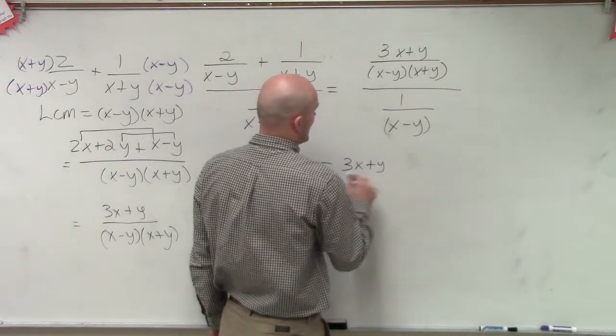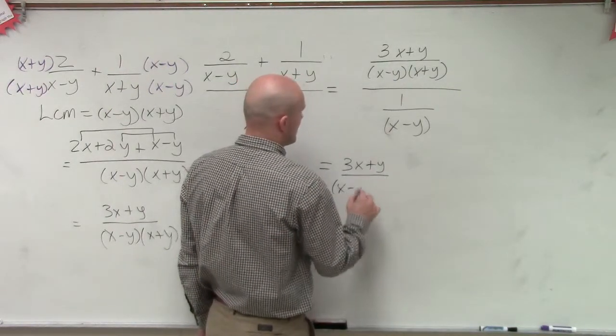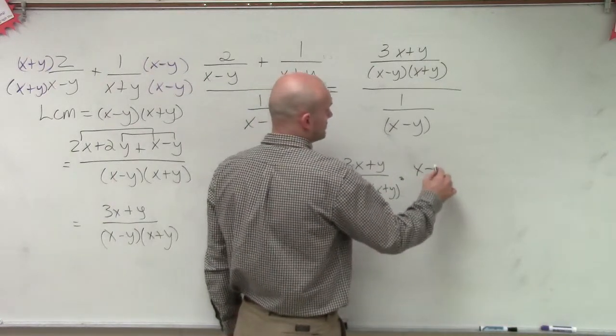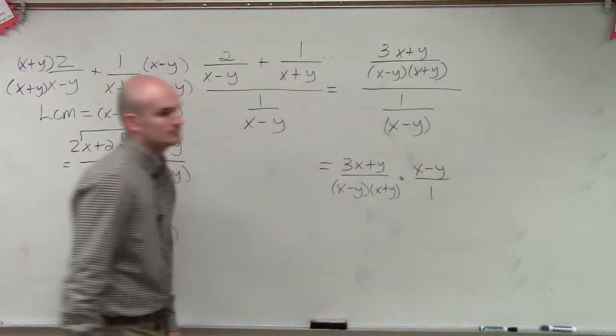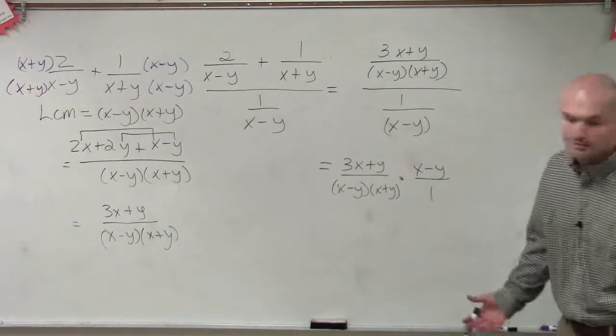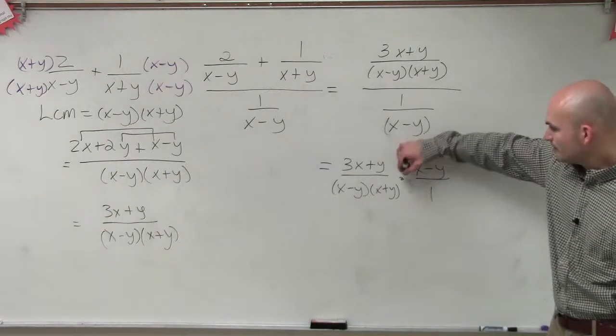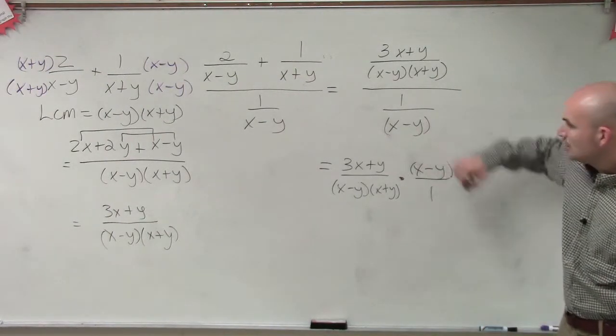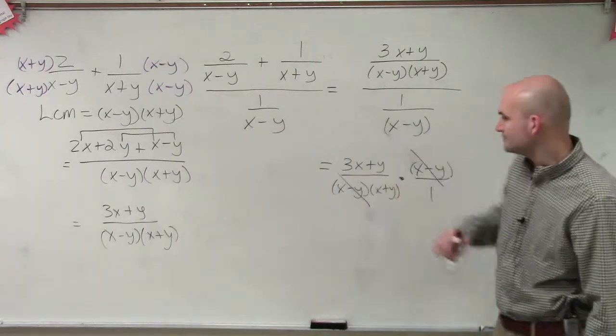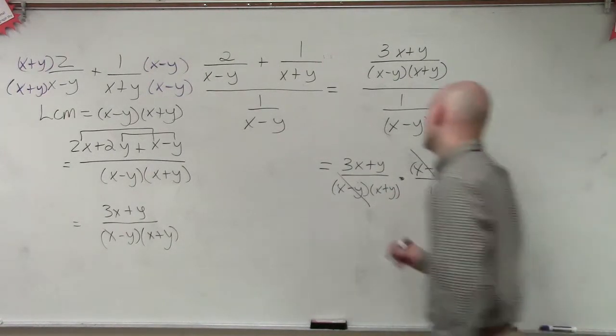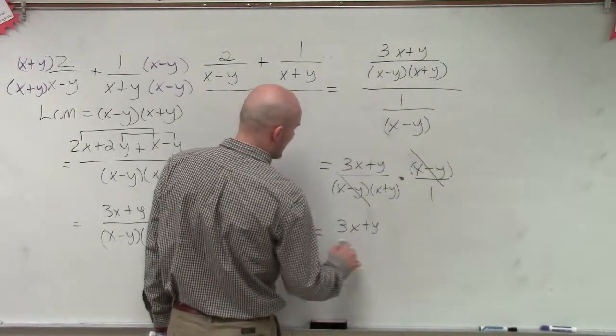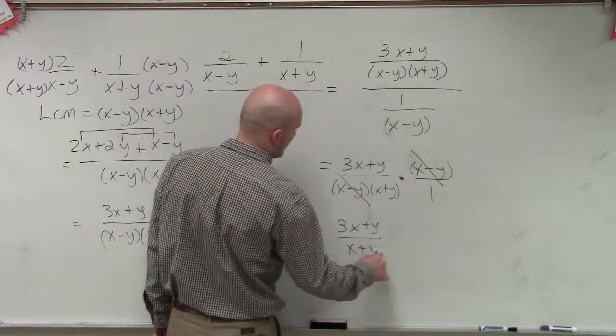So I have 3x plus y divided by x minus y times x plus y times the reciprocal. Yes? No? Maybe so? Yes. Maybe. Now we look at this, and when we multiply, we know that now we're going to have some terms that could divide out to 1.